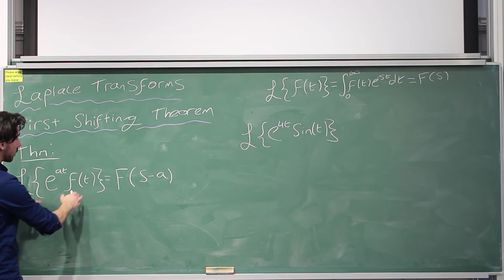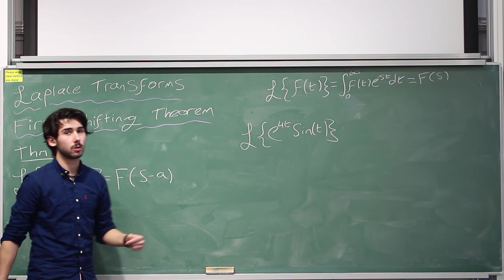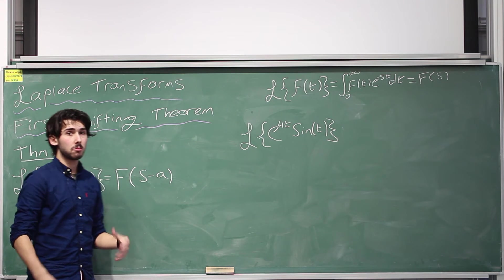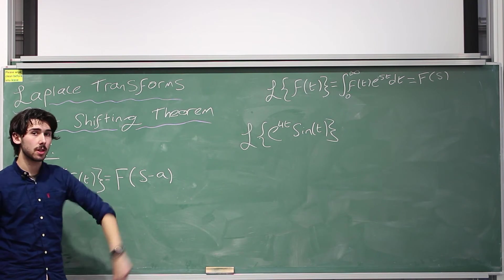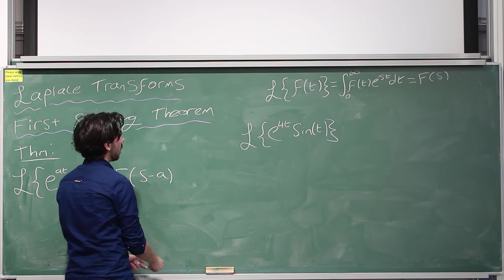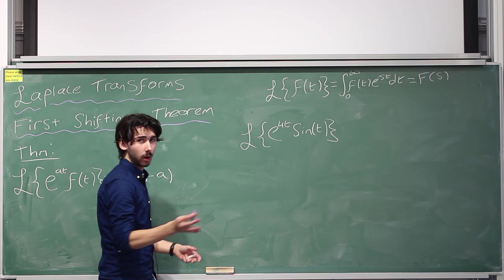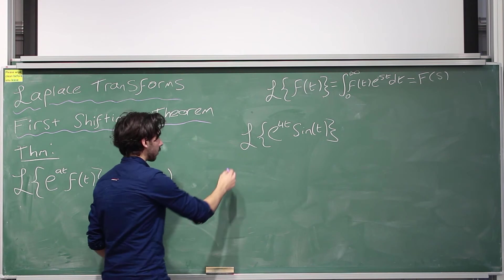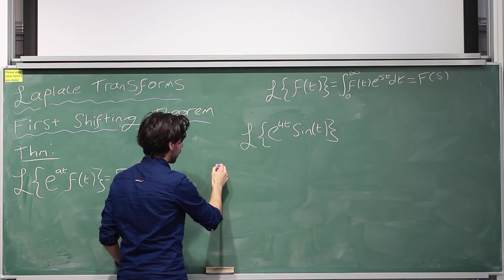All we need to do to work this out is we need to work out the Laplace transform of sine, and then just translate it a units to the right, and I'll show you exactly how to do that. So we already know, maybe I'll do this actually in purple, hopefully this comes out right, I'm not really used to using different colours with the chalk yet, but let's just try it.